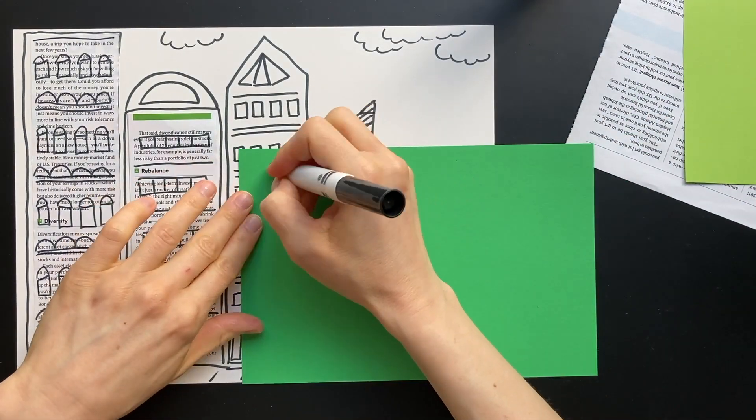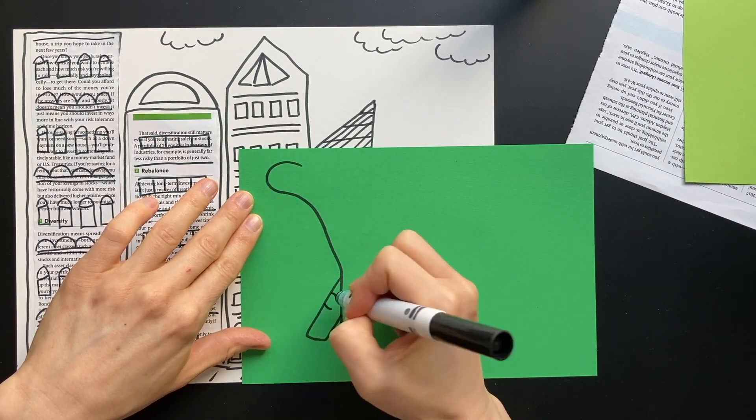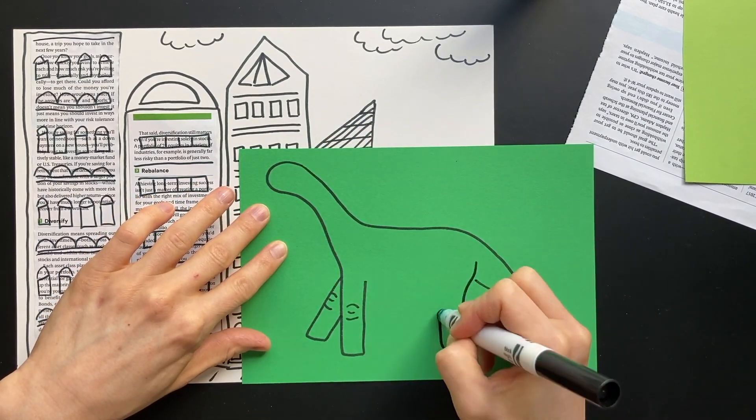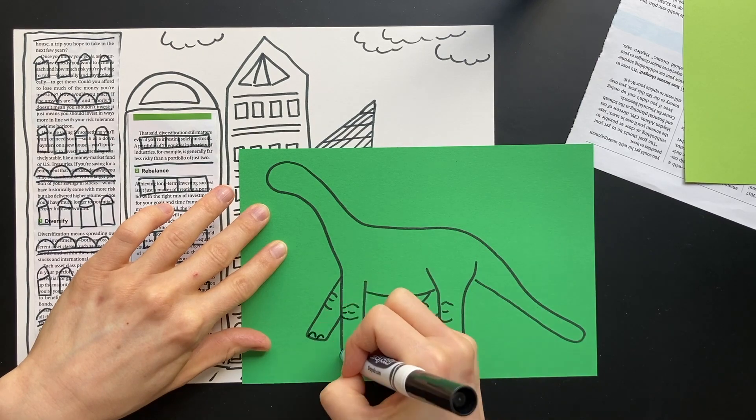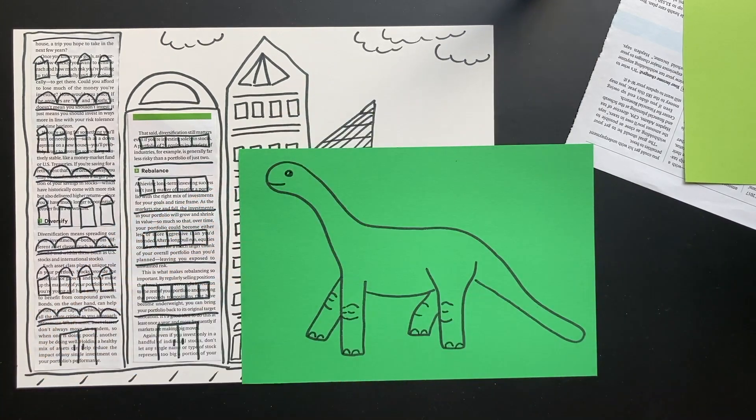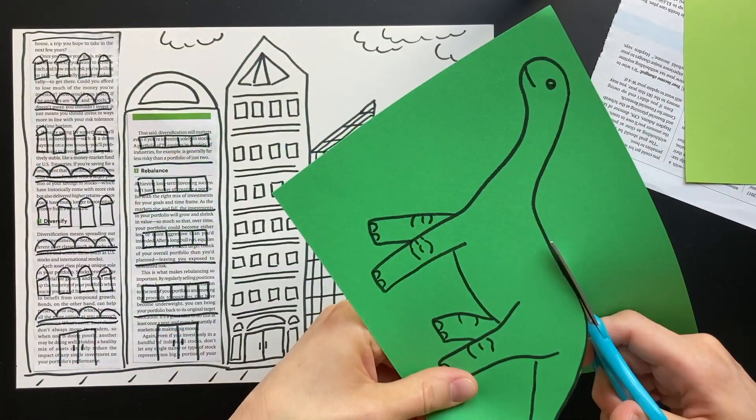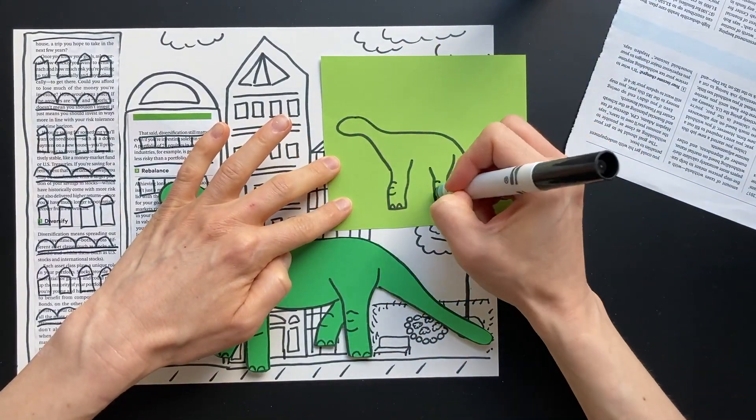Now use your marker to draw a dinosaur on a piece of construction paper. I'd like to draw a brontosaurus. Cut out your dinosaur. You can make as many dinosaurs as you like.